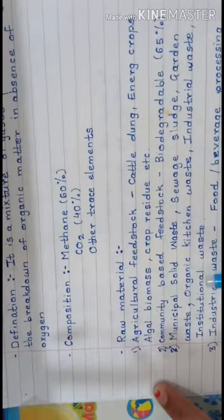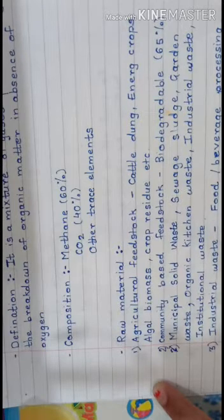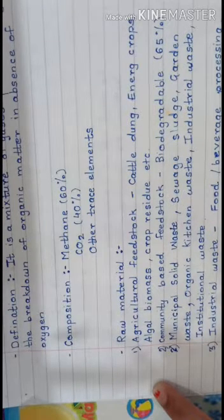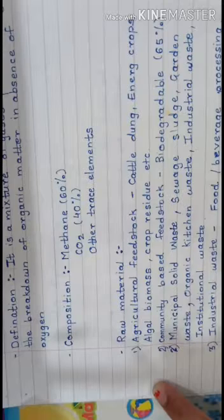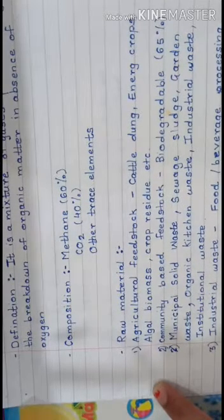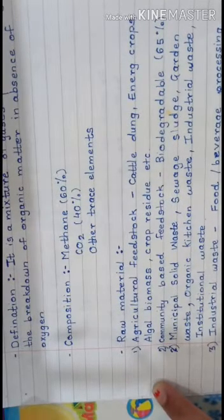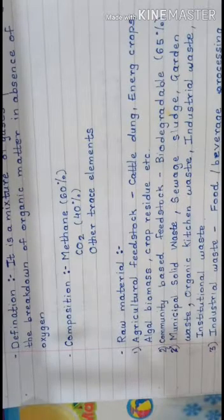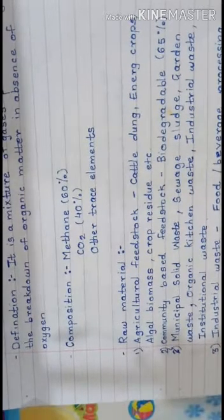Industrial waste and institutional waste are also used. For the production of biogas, raw material includes industrial waste from food and beverages processing, dairy industry, pharmaceutical industry, cosmetic industry, biochemical industry, and paper and pulp industry. This is an anaerobic process.